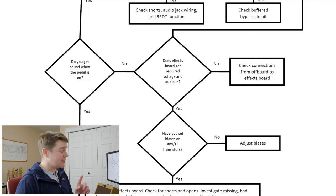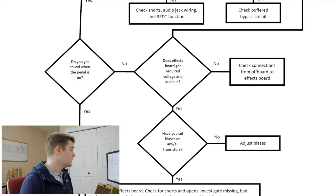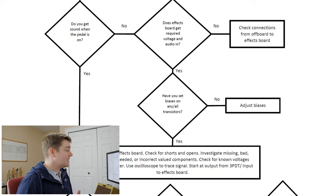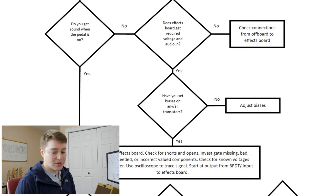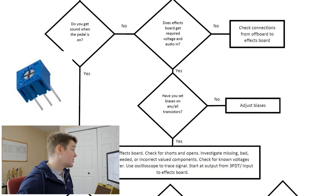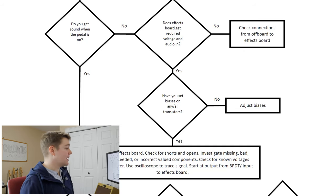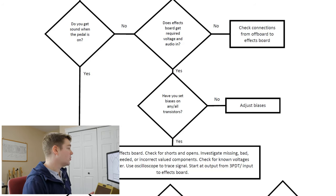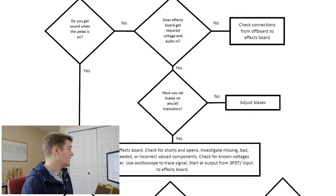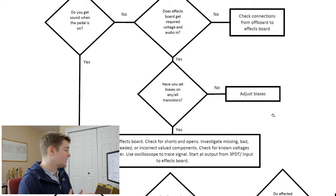If we assume we've already checked the 9-volt supply to the three-pole double throw PCB or switch, we need to make sure that 9 or 18 volts is getting from there to the effects board. Similarly, we need to make sure the audio from the jacks is getting into the effects board. If the pedal is getting audio in and the required voltage, then we're looking at something on the effects board. One common situation: if your DIY pedal has transistors, have you set the biases? A lot of times you get small trim pots that are there to set biases on transistors, and you need to make sure they're set properly.